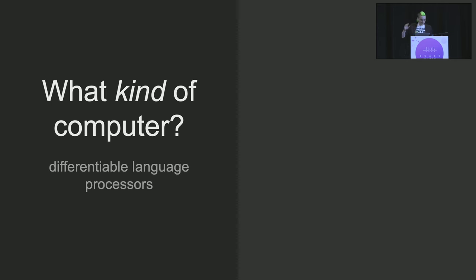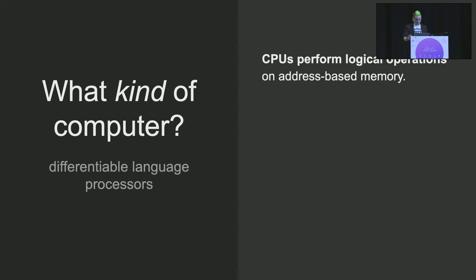So you may have seen the claim that large language models allow us to have a new kind of computer. What kind of computer? Differentiable language processors. What does that mean?